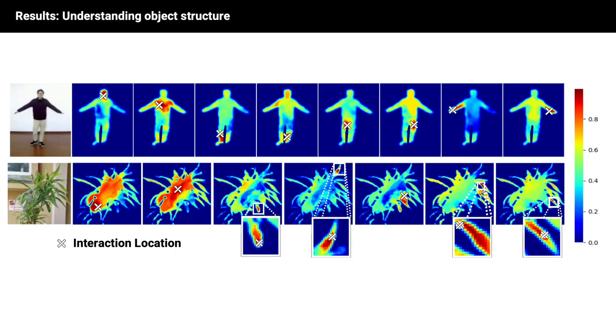Moreover, as our model understands the object structure, we can use it to identify and visualize unique object parts. By performing 100 random interactions at the same location indicated with the white cross, we obtain motion correlations for the poked pixel, which we visualize as heatmaps in this plot.